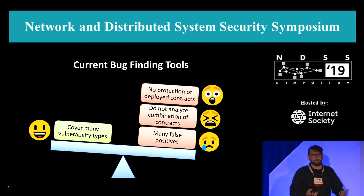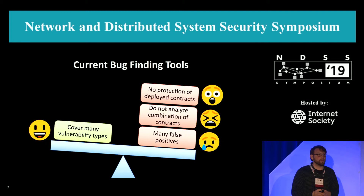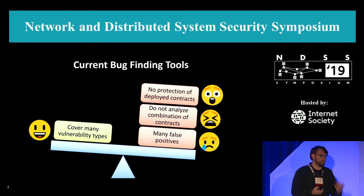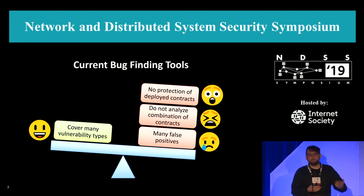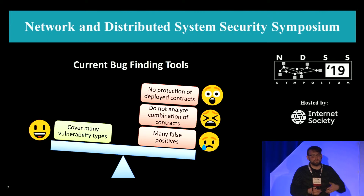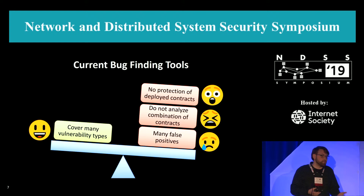Finally, there's no protection of deployed contracts. As soon as you deploy your contract onto the blockchain, it's immutable. You have to somehow manually add an upgrade path, which is not really clear how to do. Or even if you find a bug in the contract, you don't necessarily know where to report that bug to.